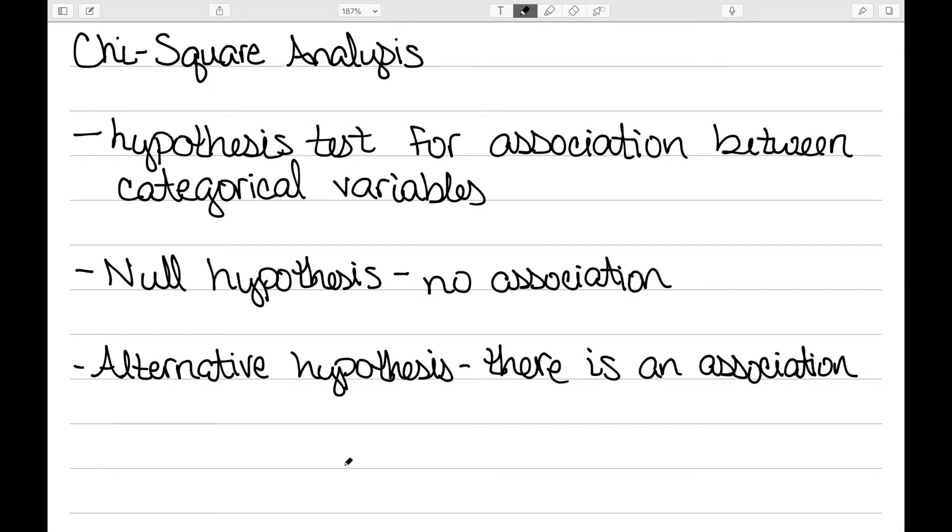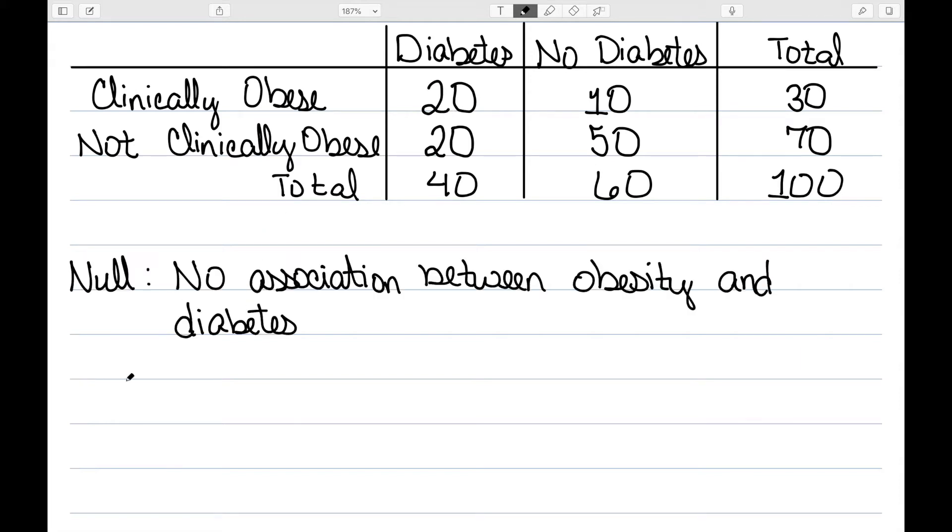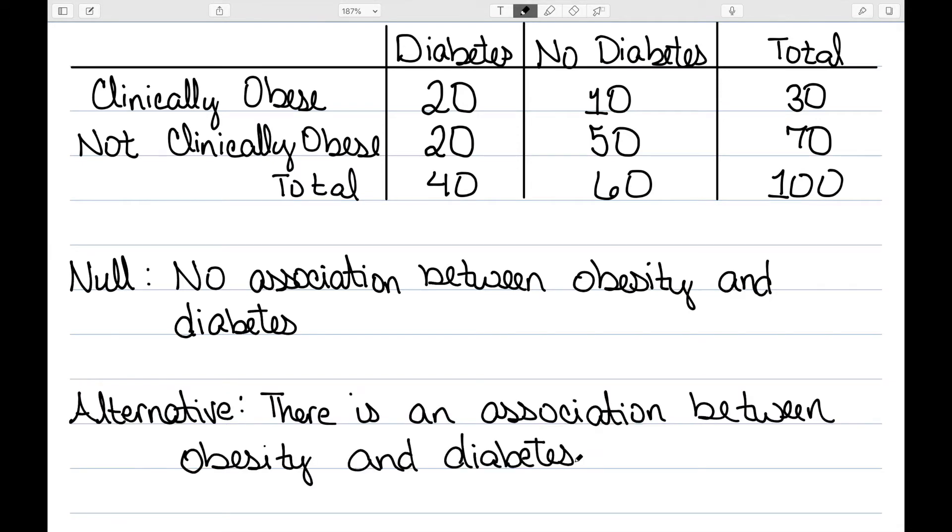Let's look at an example. Let's go back to this two-way table that looks at if individuals are obese and if they have diabetes that we have dealt with in the previous two videos. In this case, the null hypothesis would say that there's no association between obesity and diabetes. The alternative hypothesis would then say there is an association between obesity and diabetes.